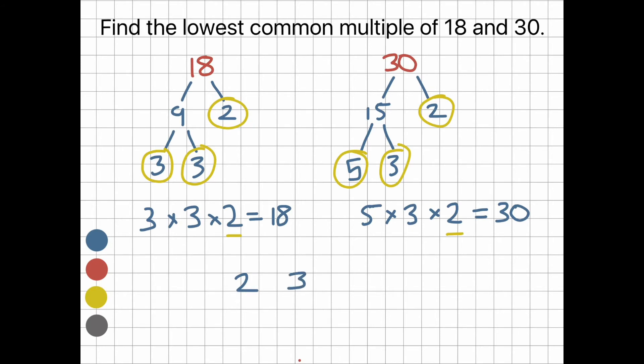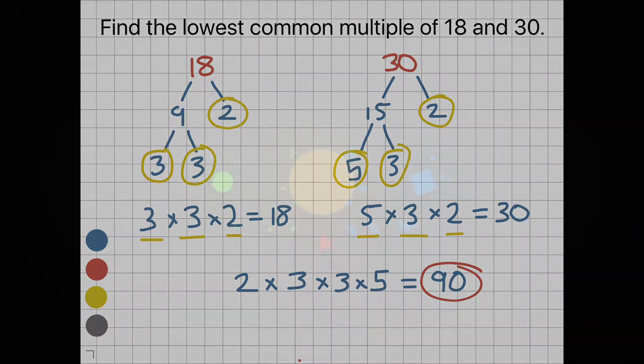We have a 3 in both, but it appears twice under 18, so we add another one on. If it's three times, we would add it three times, and so on. Then we have a 5. Let's times them all together, so 2 times 3 times 3 times 5 equals 90. 90 is our lowest common multiple.